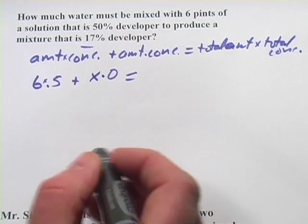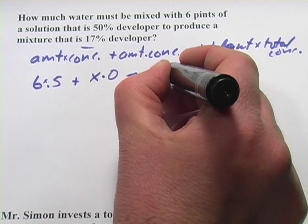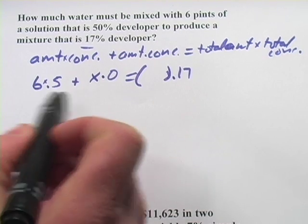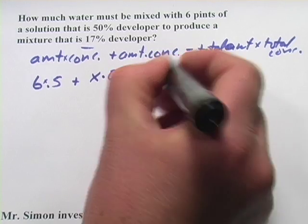And then we have to figure out our total amount and our total concentration. We know our total concentration. We want it to be 17%, so 0.17. What is our total amount? Well, we started with six pints, and we're adding x amount of water, so this is just going to be six plus x.